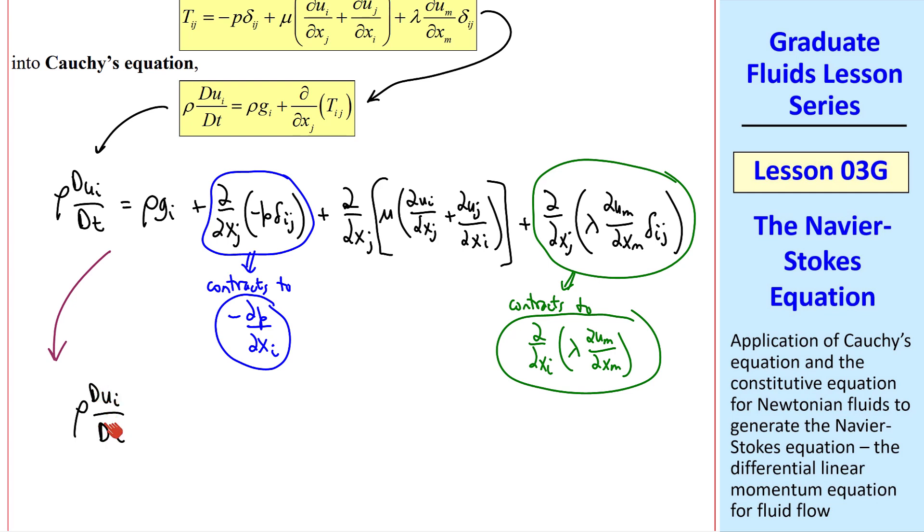We rewrite the equation as rho du i dt, keeping in mind that this is a material derivative, and fluid mechanicians like to put the pressure term first. So on the right we have minus del p del xi, plus the gravity term rho g i, plus the viscous term which remains the same, and finally this last term.